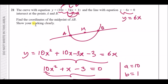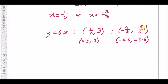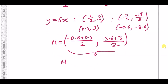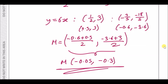To find the midpoint M, add the x-coordinates and halve: minus 0.6 plus 0.5 divided by 2. Do the same for y: minus 3.6 plus 3 divided by 2. This gives x equals minus 0.05 and y equals minus 0.3. That is your midpoint.